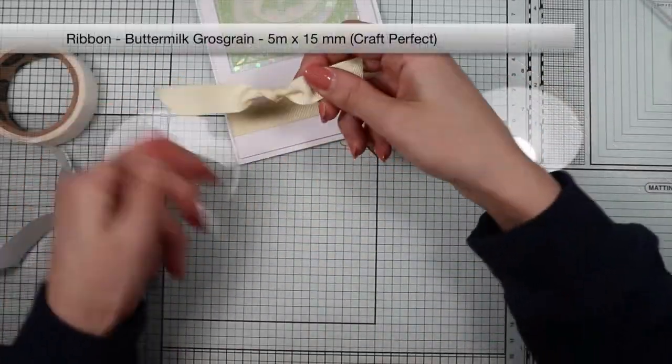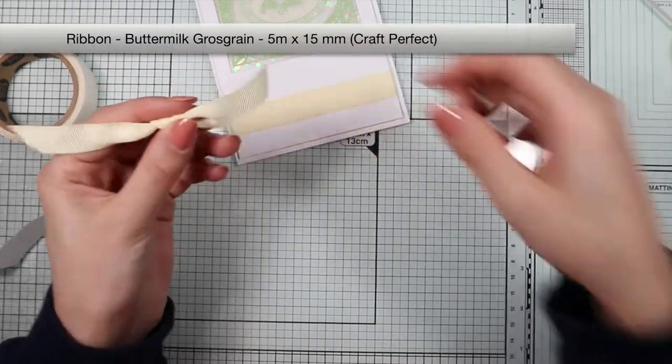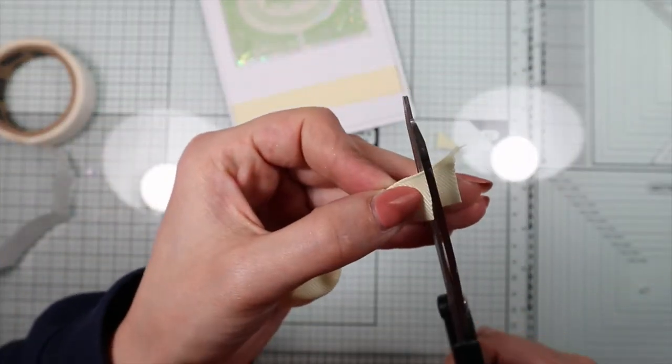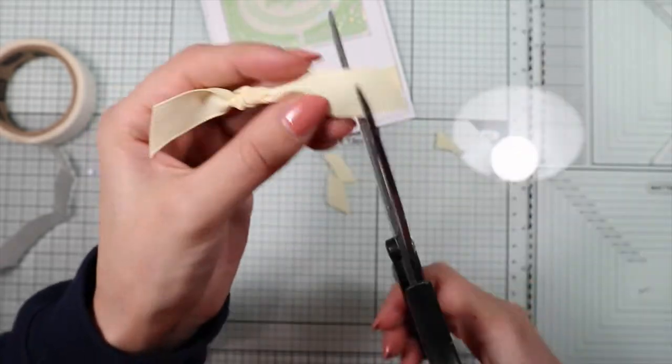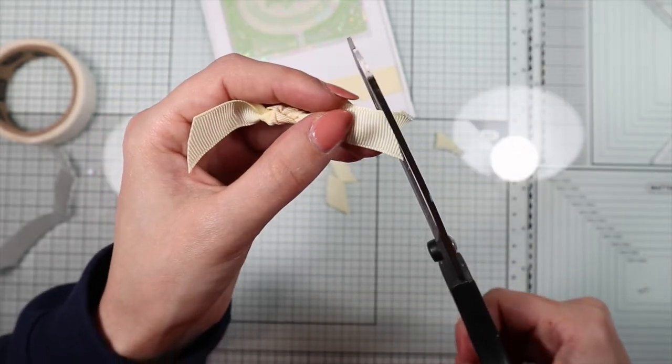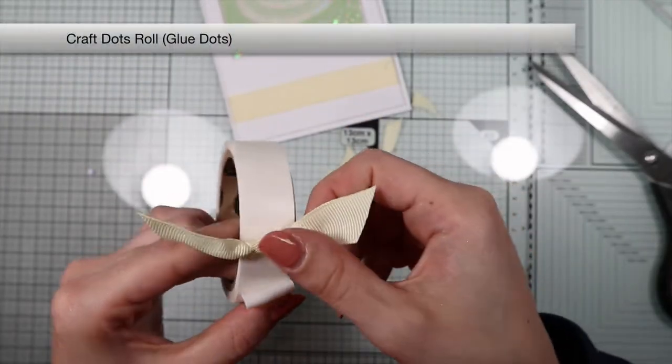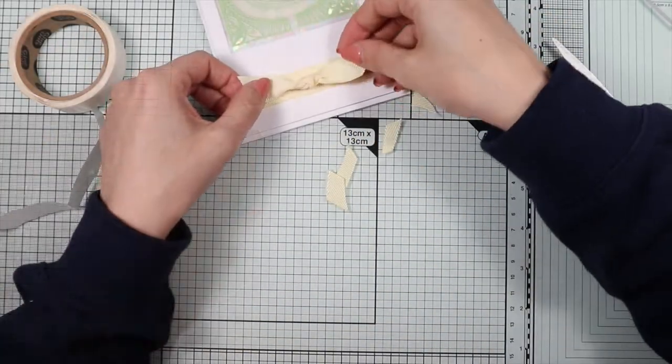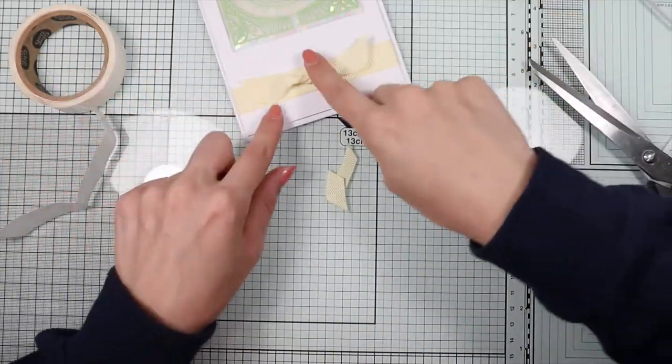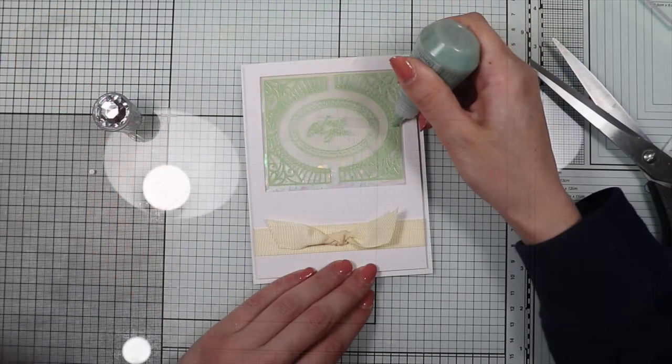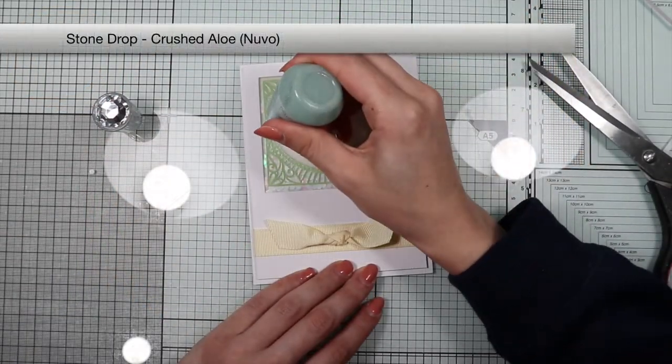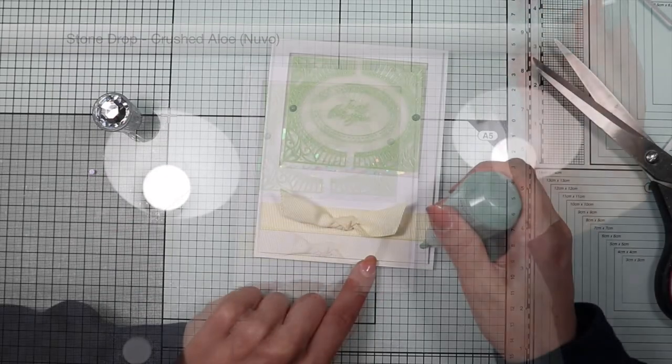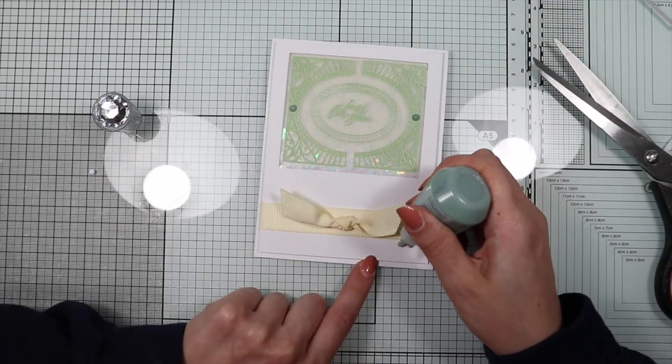On the front I'm going to stick with a glue dot a little bow which is actually a simple knot but it's so cute. I finish the shaker card by creating a few drops of the green stone drops from the kit.